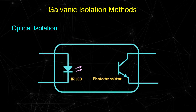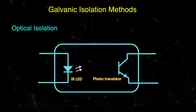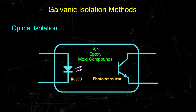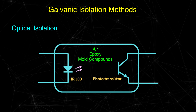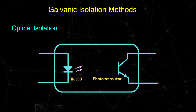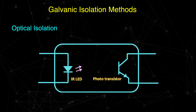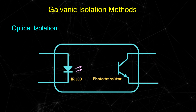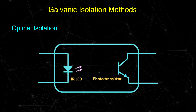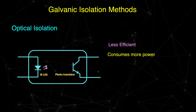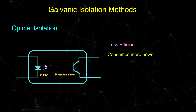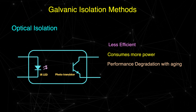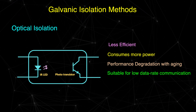Typically in this method, the insulating material between the transmitter and the receiver is air, but sometimes epoxy or mold compounds are also used. The dielectric strength of these materials is relatively low compared to other dielectric materials. Therefore, to achieve the same level of isolation, the physical distance between the transmitter and the receiver needs to be increased, requiring more power to transmit the same signal. This technique is less efficient and consumes more power compared to other techniques. Additionally, with aging, the performance of these opto-isolators also degrades. This technique is generally good for low data rate communications.